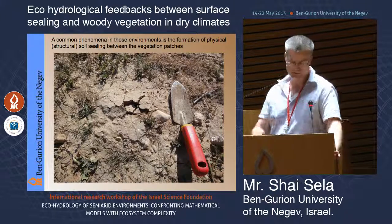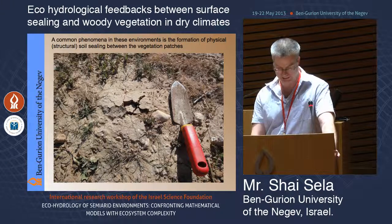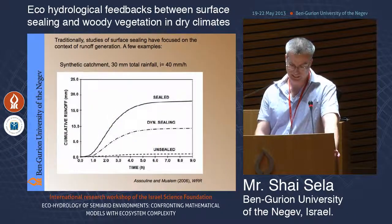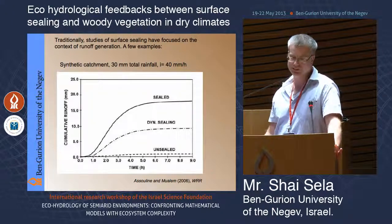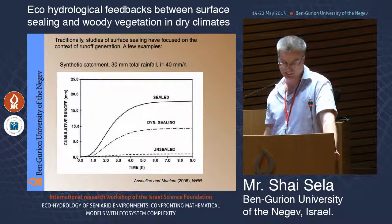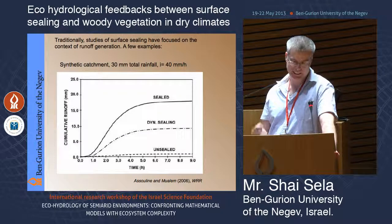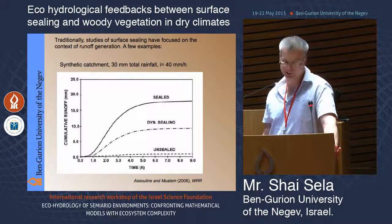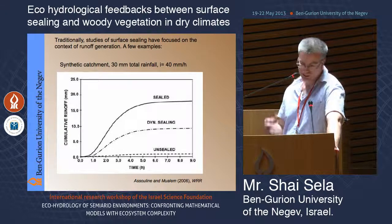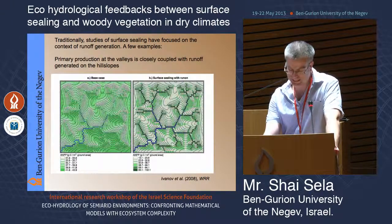I will not go into much detail about the mathematical description because Shmuel just covered it. It is a compacted layer at the soil surface that affects significantly the water content in the soil profile underneath it. Traditionally, studies of surface sealing focused on the context of runoff generation — there are dozens of studies in the literature. In a synthetic catchment from the work of Asulin and Wa'alem 2006, with 30 mm total rainfall at 40 mm per hour intensity, if you do not account for sealing, you do not get any runoff.